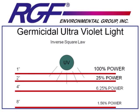Looking at the chart, if we're able to achieve the CT value and sterilize a microbe in one second at one inch, at two inches it's going to take four seconds, at four inches 16 seconds, and at eight inches 64 seconds to sterilize that same microbe. If you're focusing on an object like an AC cooling coil, it's going to shine on it for 24 hours a day, and this extended exposure time means that even with low light levels, you can sterilize microbes and prevent growth on that object.